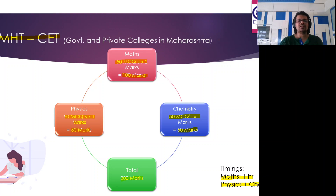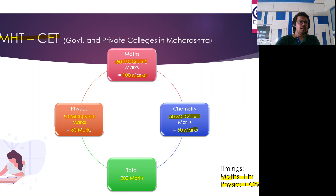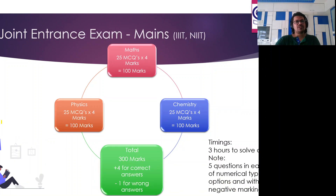For the MHT CET, if it's a pen-and-paper based exam, the maths paper is one hour and the physics and chemistry paper is also one hour separately. If it's an online paper, it is a three-hour paper where maths, physics, and chemistry all come together and you get three hours to complete the entire paper. To get into the top colleges, your percentile ranking has to be a minimum of 95 percentile.